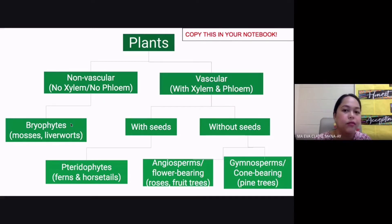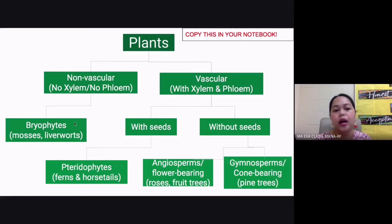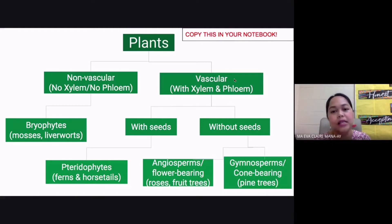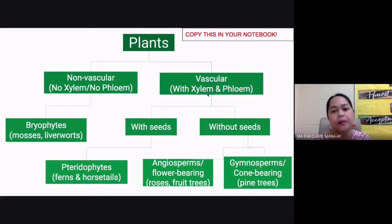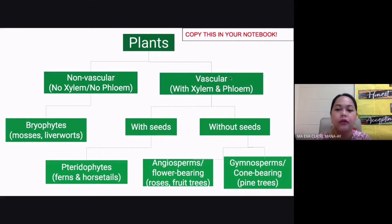Examples of bryophytes include mosses and liverworts. The other major division is vascular plants, which have vascular tissues — xylem to transport water and nutrients, and phloem to transport food.